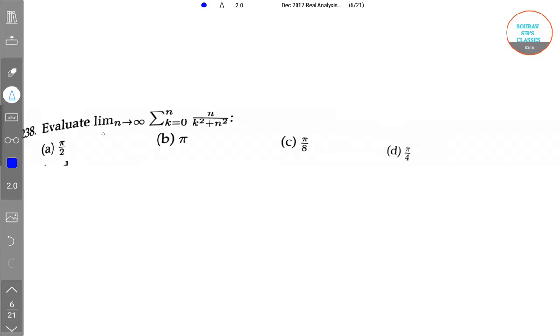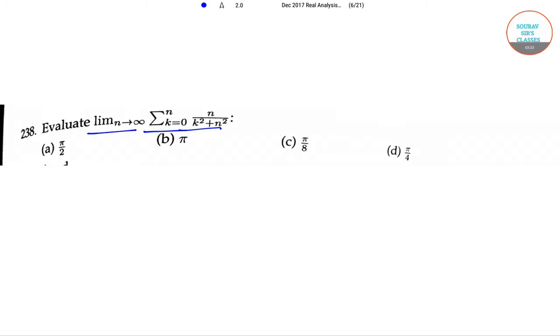The next question is: evaluate limit n tending to infinity, summation k equals 0 to n of n by k squared plus n squared.